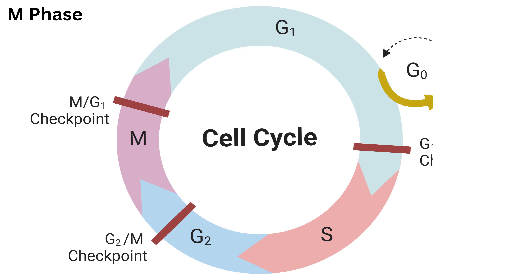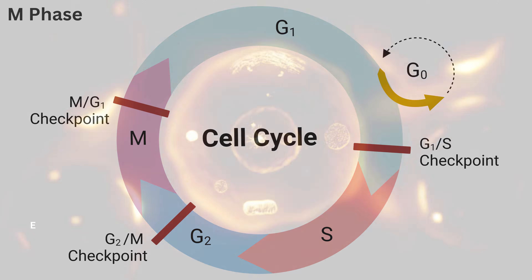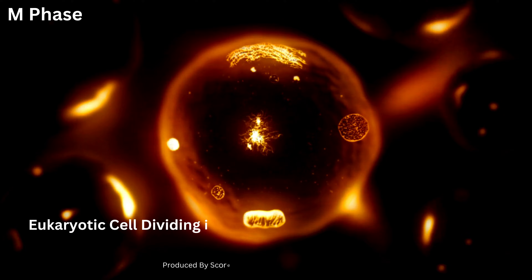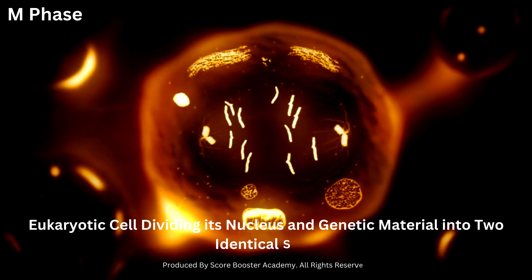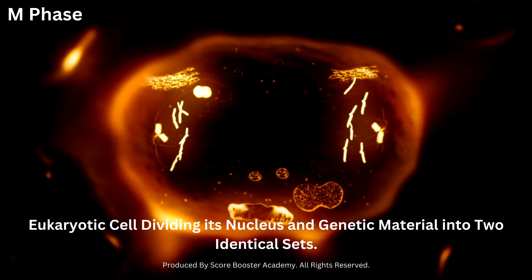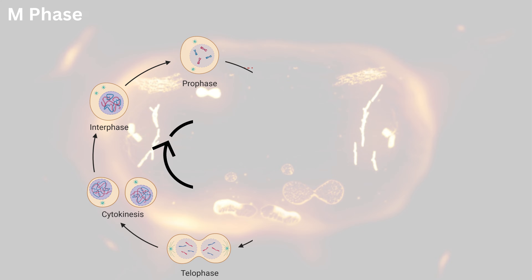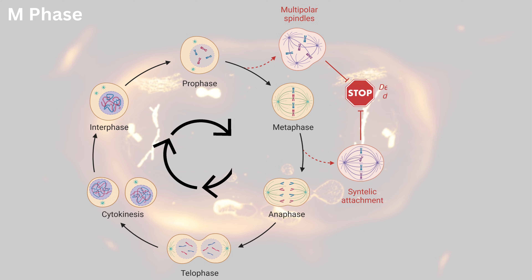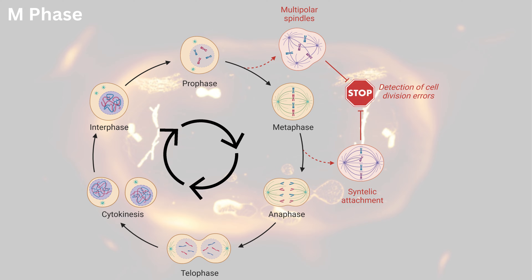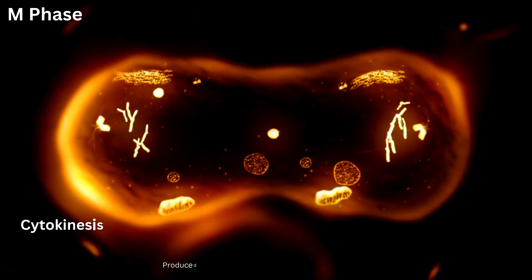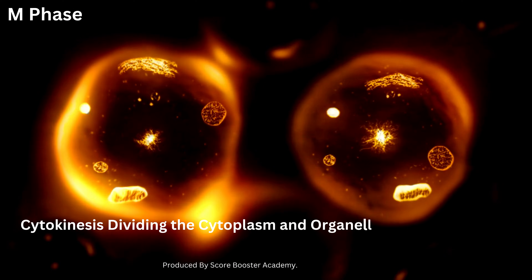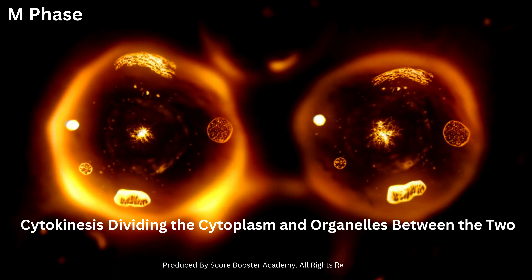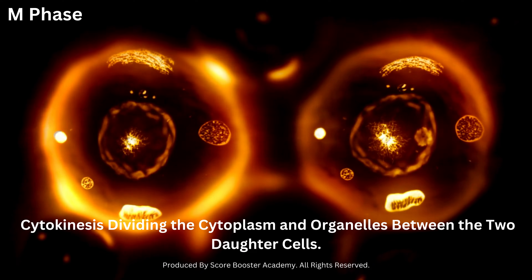M phase, or mitosis, is the process by which a eukaryotic cell divides its nucleus and genetic material into two identical sets. It consists of several distinct stages: prophase, metaphase, anaphase, and telophase. Following mitosis, cytokinesis occurs, dividing the cytoplasm and organelles between the two daughter cells. This ensures each cell receives the necessary components for proper functioning.